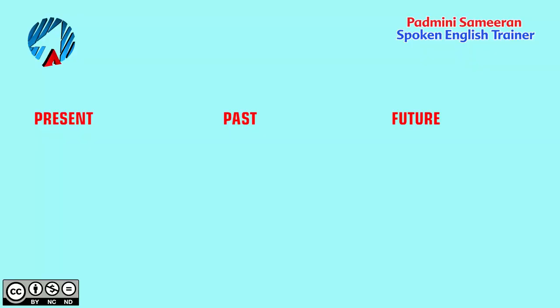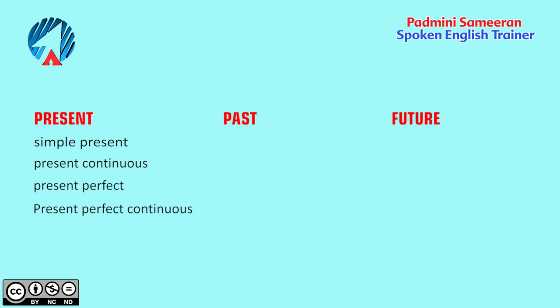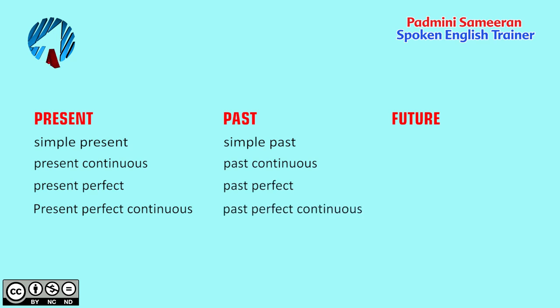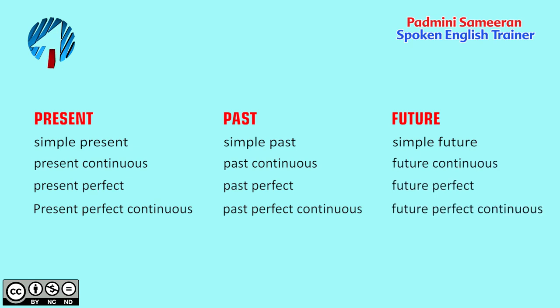The present tense includes the simple present tense, then the present continuous tense, then the present perfect tense, and the present perfect continuous. Similarly the past tense is divided into simple past, past continuous, past perfect, and past perfect continuous. The future tense is also divided into simple future, future continuous, future perfect, and future perfect continuous.